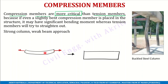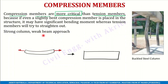If a tension member fails, it will be a localized failure. But if your column fails, the beam will also collapse, and the whole floor will collapse, and casualties will increase. That is why we consider this in both RCC and Steel Design.